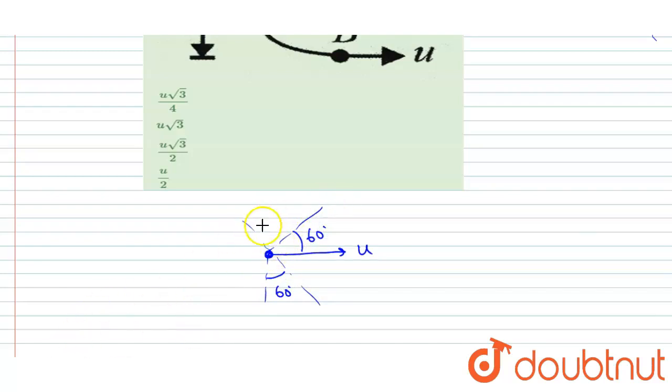So this angle will also be 60 degrees. The component of velocity perpendicular to the string will remain as it is with B, but this will be changed here because this will experience an impulse due to the tension. So this will be u by 2 and this will be root 3 u by 2 before the collision.